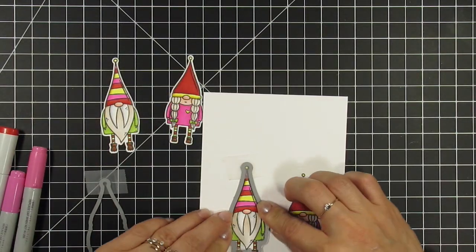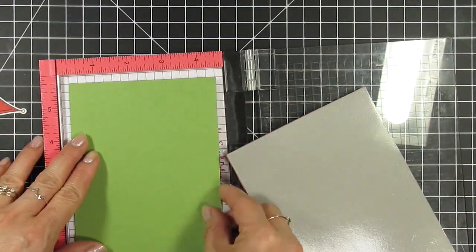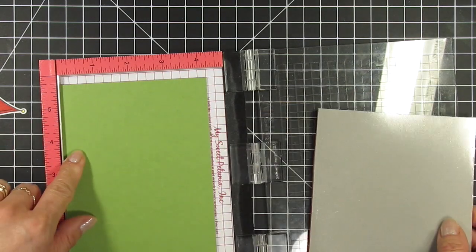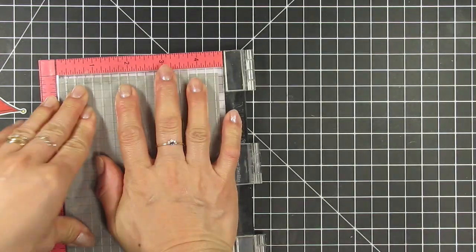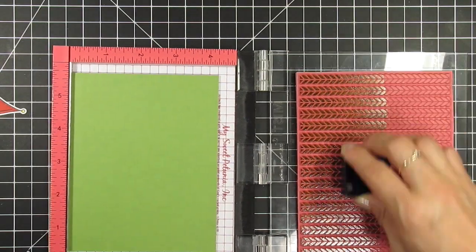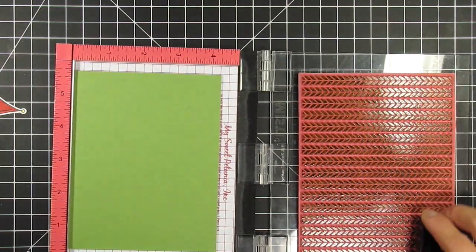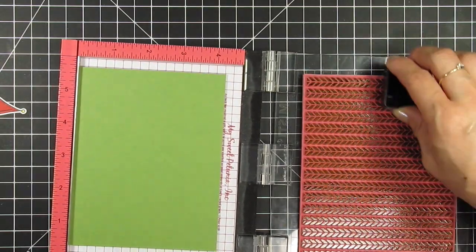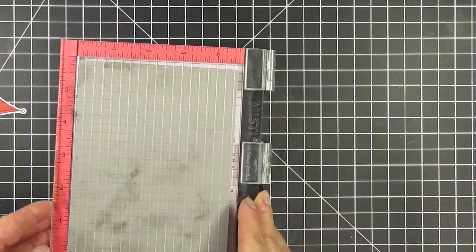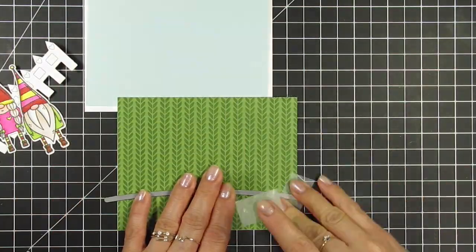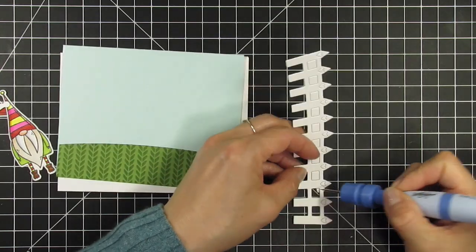After the coloring is done, I die cut the gnomes and stamp the cable knit background on Peapod cardstock using Peapod ink for a tone-on-tone look. I prepare a card base and cut a panel from saltwater taffy cardstock. Then I use the hill die to die cut the grass from the stamped panel. I use my tool-in-one to remove the negative pieces from the fence.